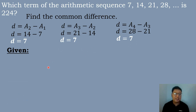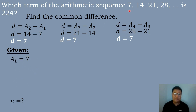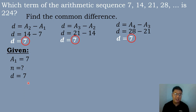After that, we will identify the given. So a sub 1 is equal to 7 — that is the value of our first term. The value of n is unknown, and the value of the common difference is equal to 7.